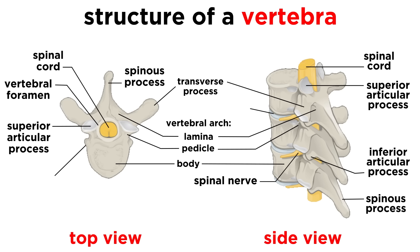Now let's look a little closer at an individual vertebra. These all have a body and a vertebral arch. The hole is called the vertebral foramen, and the spinal cord passes through here. The vertebral arch is made of two pedicles and two laminae, and from these project various processes: these are the spinous process, two transverse processes, as well as the superior and inferior articular processes.